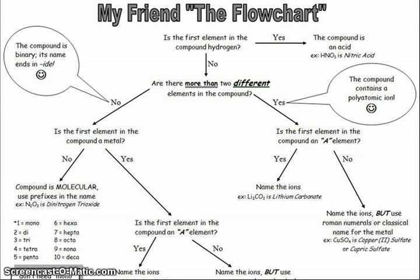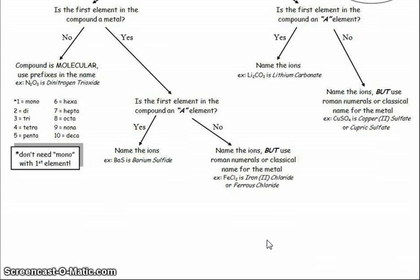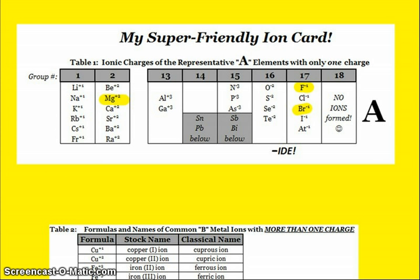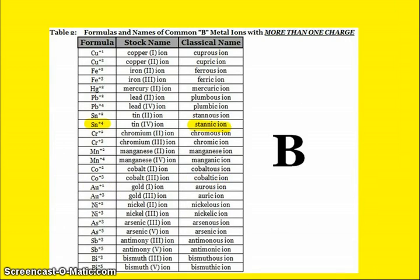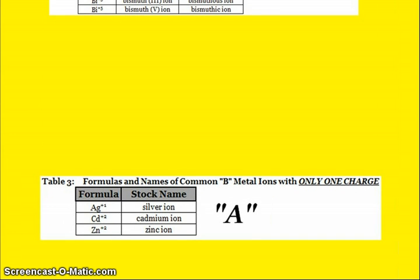Once you figure that out, you've got to know the difference between a metal and a non-metal. And then you've got to know the difference between an A and a B element. Remember that an A element will only form one type of ion. A B element will form more than two. And when you have a B element, that's when you're going to have to use Roman numerals or the classical name in the compound name. And again, those are found on our super-friendly ion card. The A elements are at the top. The B elements are in the middle. And then there are those couple extra A elements: silver, cadmium, and zinc, because they only form one kind of ion.